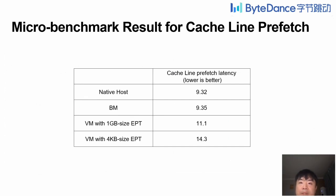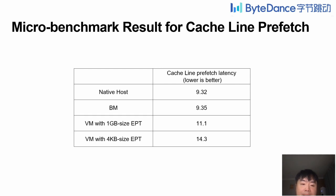Here is our microbenchmark result for cache-line prefetch, which we think can represent the page table walk overhead. The latency in the VM, which is 9.35, is nearly equal to 9.32 in native host. The latency of the VM with 4KB size EPT is worse, at 14.3. To our surprise, the latency of the VM with 1GB page size EPT is also worse than the VM, at 11.1, even if the EPT TLBs are always hit in this situation.